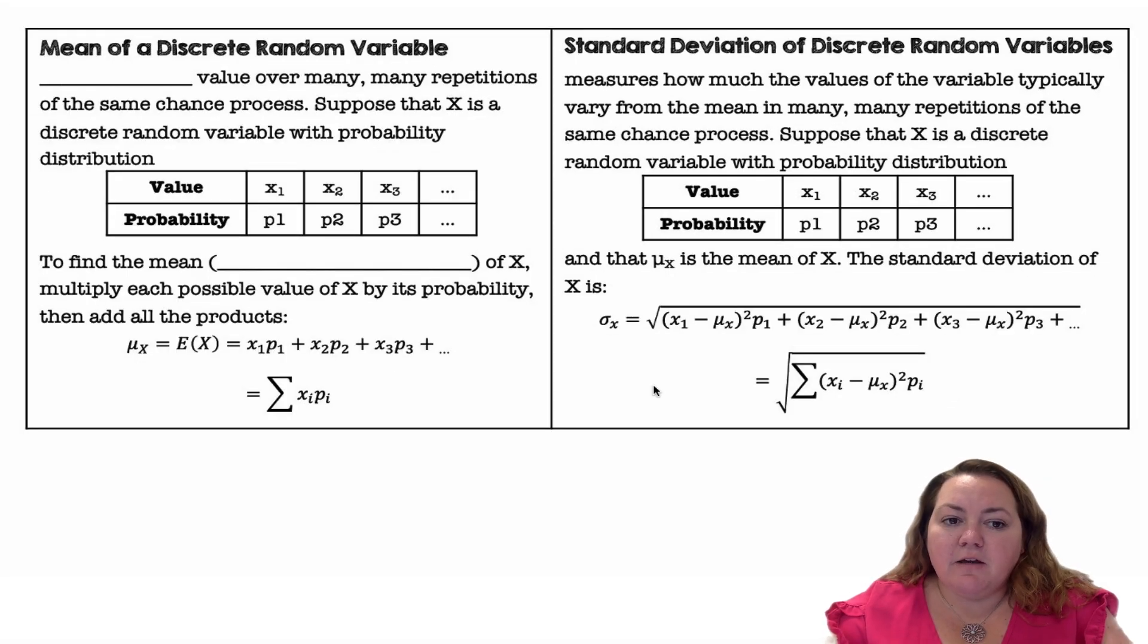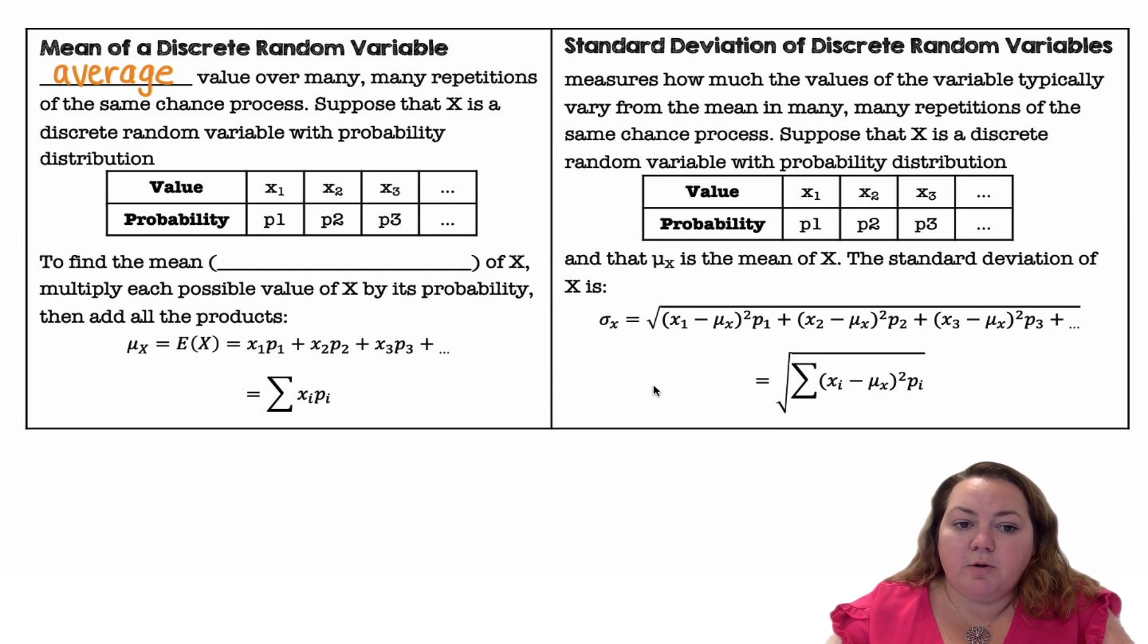The mean of a discrete random variable is the average value over many, many repetitions of the same chance process. Suppose that x is a discrete random variable with probability distribution shown below. To find the expected value of x, multiply each possible value of x by its probability, then add all the products. So x₁ times p₁ plus x₂ times p₂ plus x₃ times p₃ and so on.